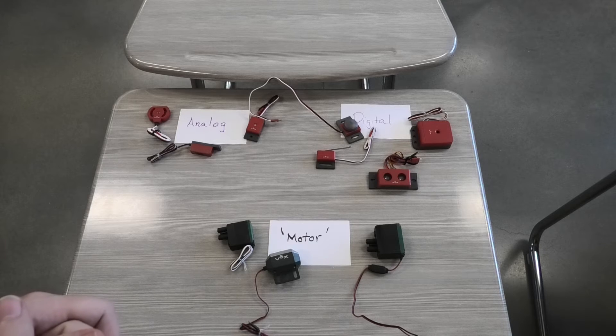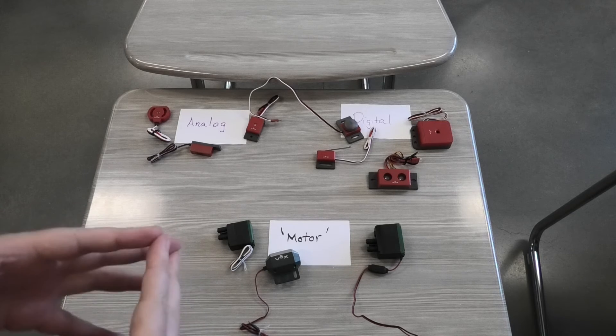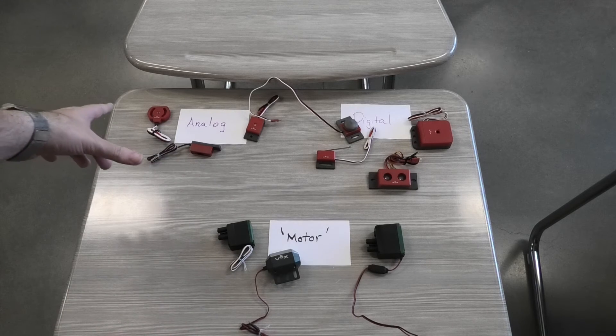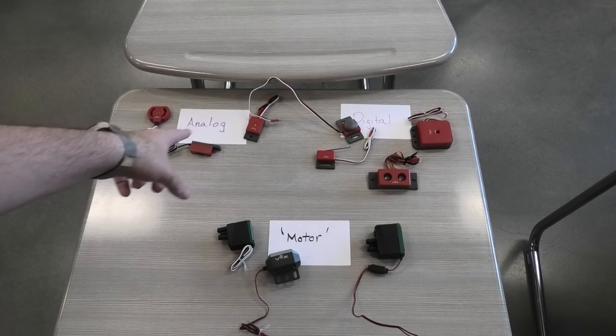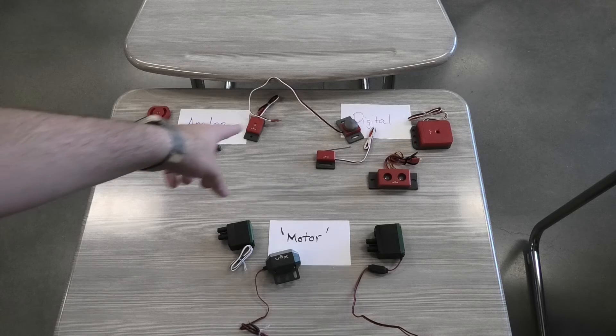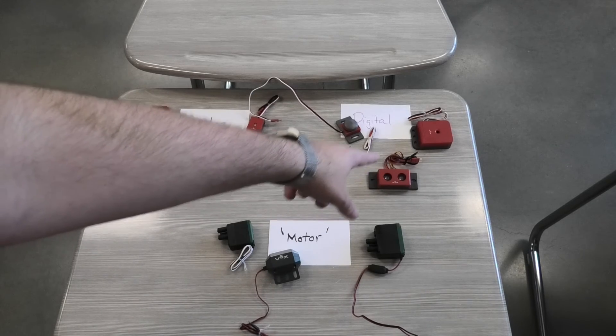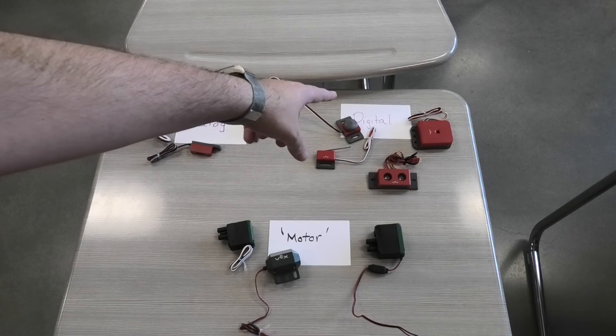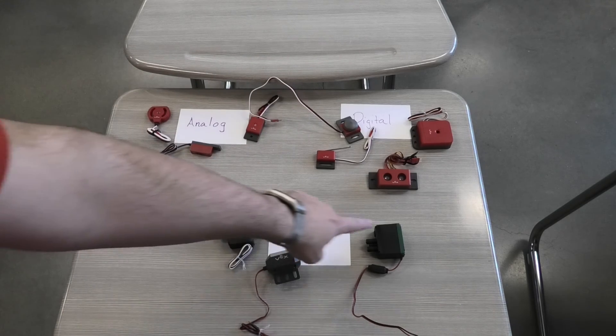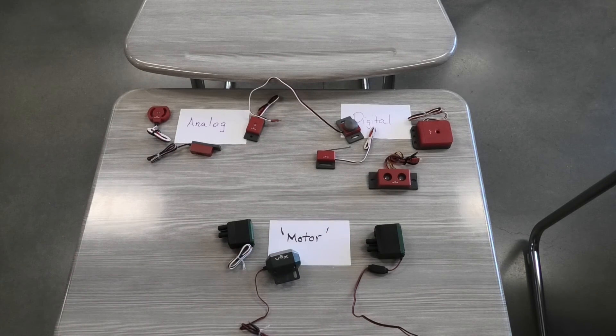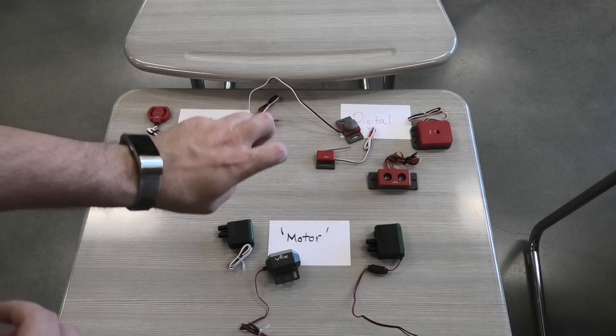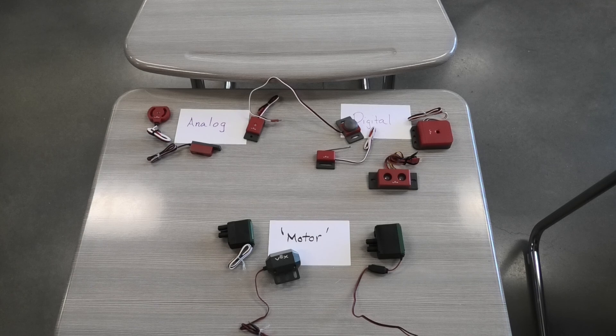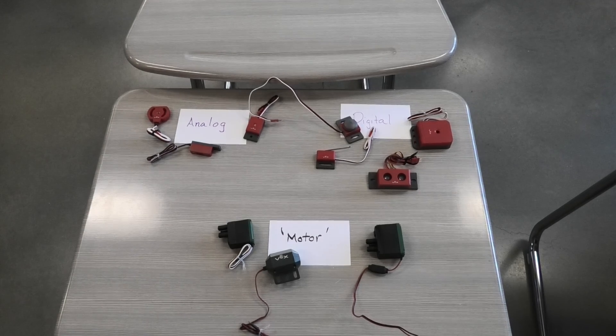These are all of the basic VEX parts that we're going to be using whenever we program our stuff, and we're going to have to make sure that these get plugged into the right locations. So potentiometer, line follower, light sensor goes in the analog spots. Buttons, rangefinders, and the quadrature encoders—they go in the digital components. And servos, motors, and flashlights—those go in the motor components. That's all that I got for you guys for the moment. Have a great day, and we'll talk later.